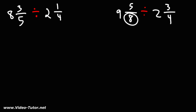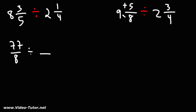First, let's rewrite the denominator, 8. Next, we're going to multiply the whole number by the denominator and then add the numerator. 9 times 8 is 72, plus 5, that's 77. Let's do the same for the second fraction. Let's rewrite the denominator, and then 2 times 4 is 8, plus 3, that is 11.